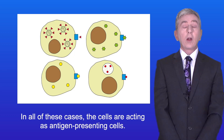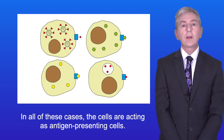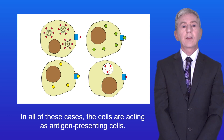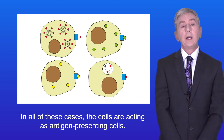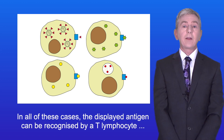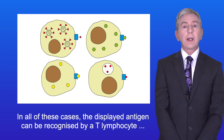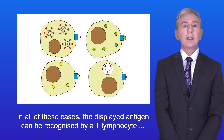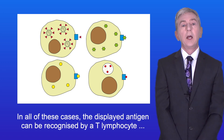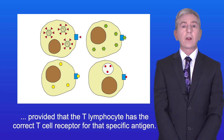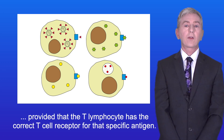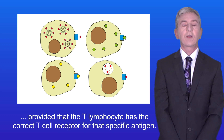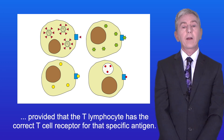Lastly, when a macrophage engulfs a pathogen, the pathogen's antigens are displayed on the macrophage surface. In all of these cases the cells are acting as antigen-presenting cells, and the displayed antigen can be recognized by a T lymphocyte provided that the T lymphocyte has the correct T cell receptor for that specific antigen.